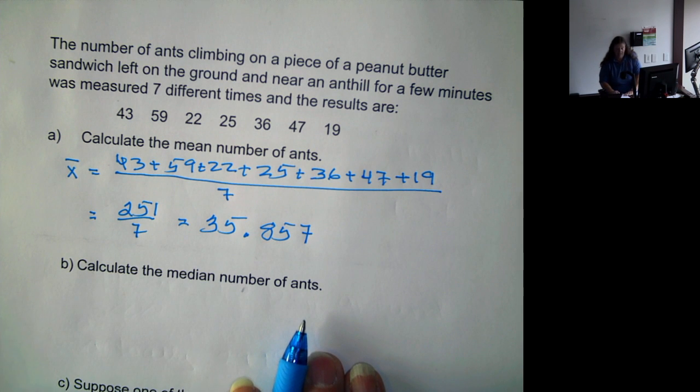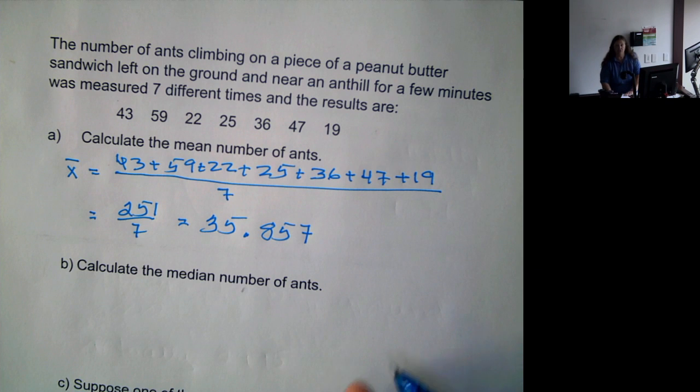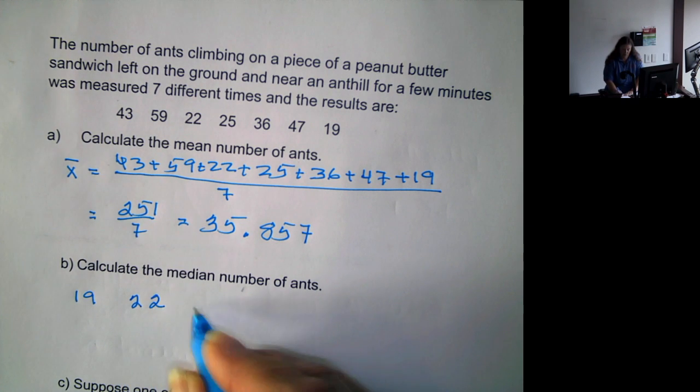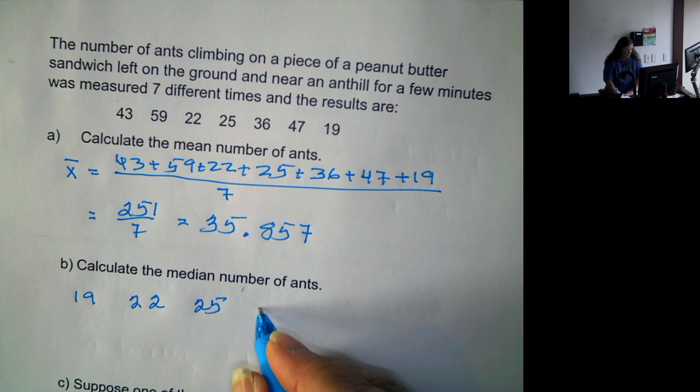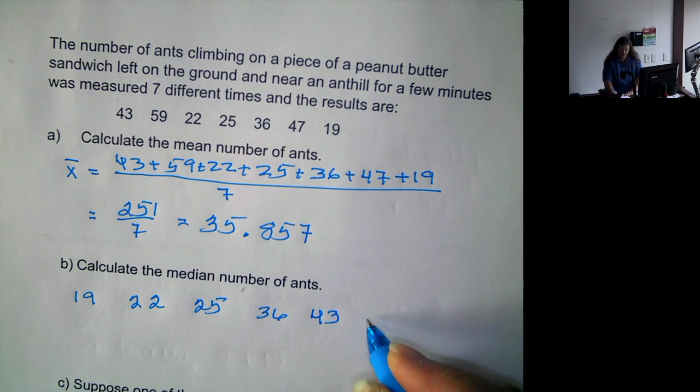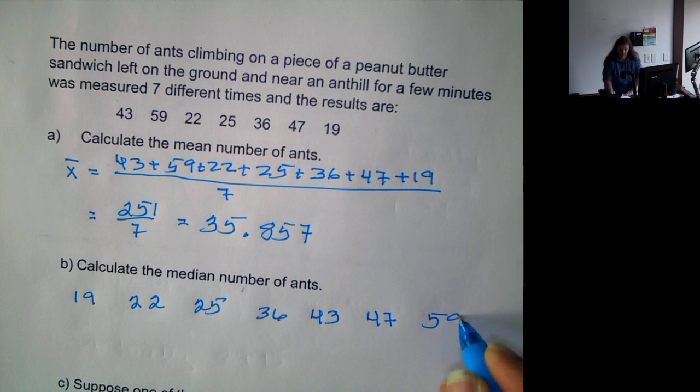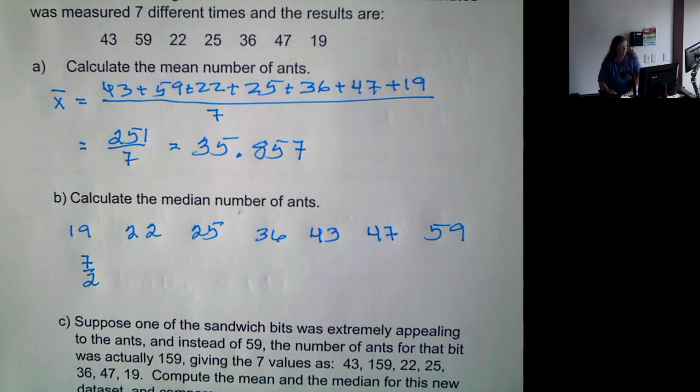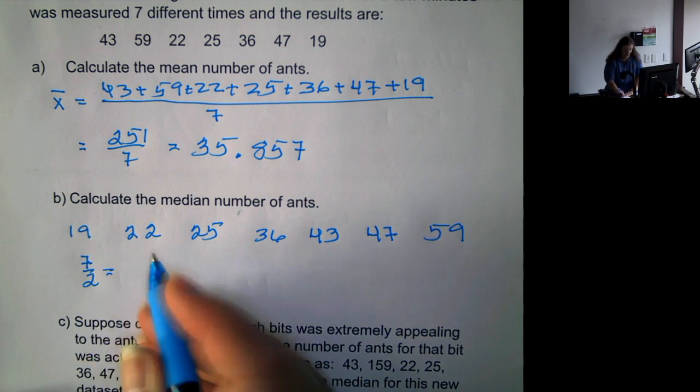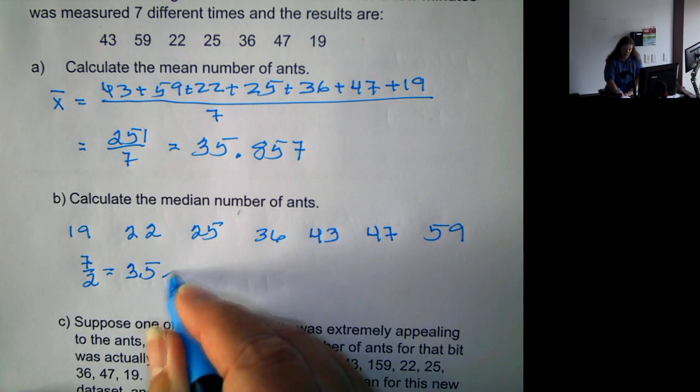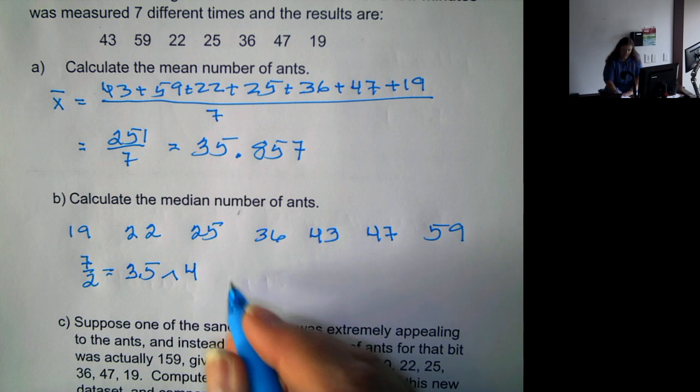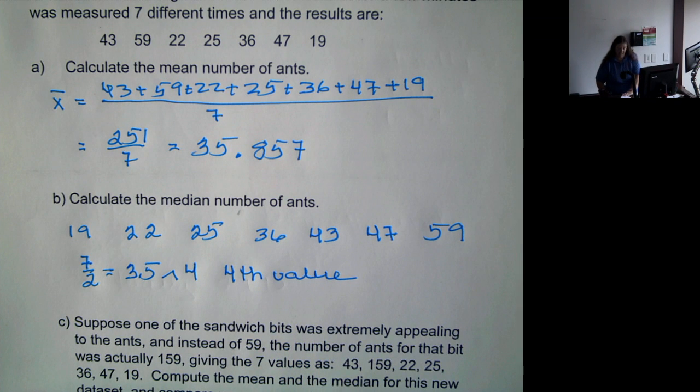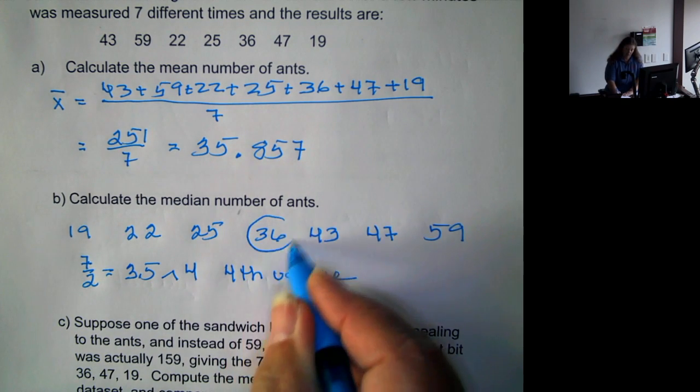Now we want to calculate the median number of ants. Well, to get the median, the first thing we have to do is put the data into ascending order. So that's 19, 22, 25, 36, 43, 47, and 59. We have seven numbers. We want the number in the middle, so we want 50% of the numbers below, 50% above. So we divide the 7 by 2, get 3.5, raise it to the next whole number. So this means that the fourth value in the data set in ascending order is going to be the median. So in this case, it's 36.